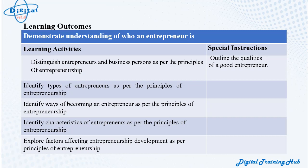Lesson 1, Learning Activities: 1. Distinguish entrepreneurs and businesspersons as per the principles of entrepreneurship. Special instructions: outline the qualities of a good entrepreneur. 2. Identify types of entrepreneurs as per the principles of entrepreneurship. 3. Identify characteristics of entrepreneurs as per the principles of entrepreneurship. 4. Explore factors affecting entrepreneurship development as per principles of entrepreneurship. 5. Identify ways of becoming an entrepreneur as per the principles of entrepreneurship.